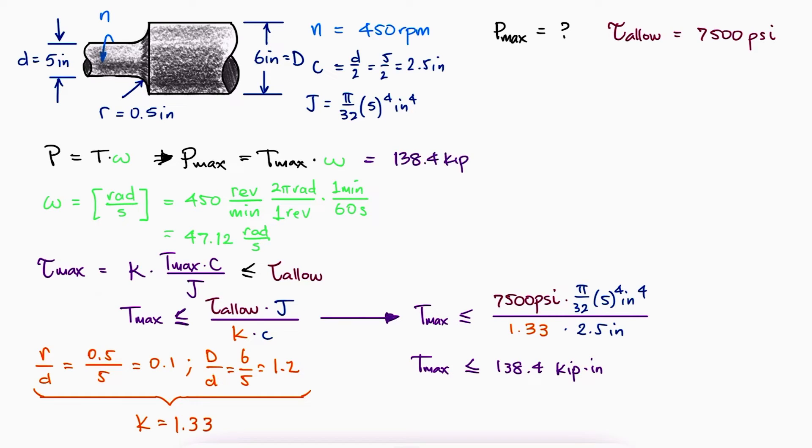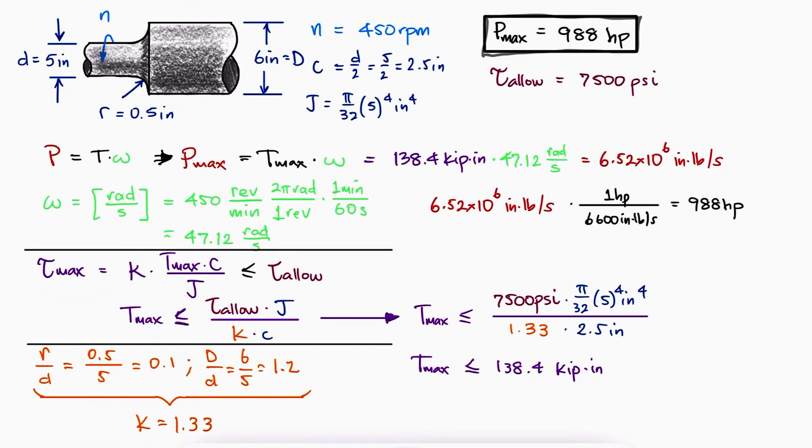With this maximum torque value and the angular velocity we previously found, we find the value for the maximum power in pound inches per second, and knowing that 1 horsepower is equal to 6,600 pound inches per second, we find a maximum power of 988 horsepower.